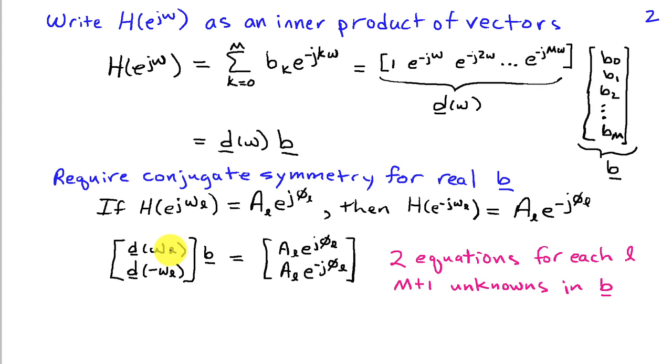This leads us to a system of equations where I have two equations and M+1 unknowns in the vector b. I want D(ω_L) inner product with b to equal A_L e^(jφ_L), and D(-ω_L) times b to equal A_L e^(-jφ_L). So at each frequency, we're going to have a pair of equations. This gives us two equations for each L. There's a total of M+1 unknowns in b.